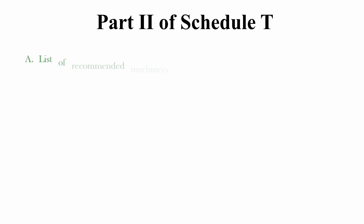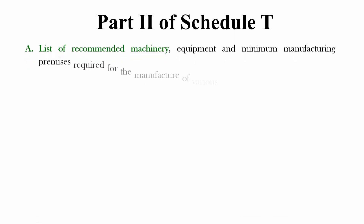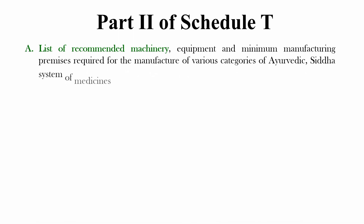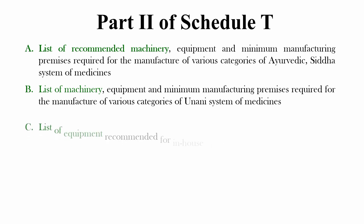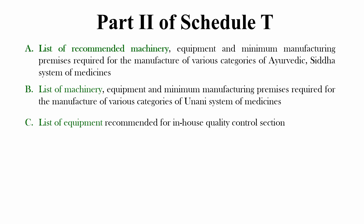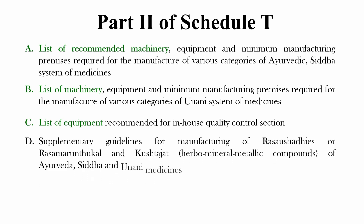Part 2 of Schedule T is the list of recommended machinery and minimum manufacturing area. Point A is the list of recommended equipment and minimum manufacturing premises required for the manufacture of various categories of Ayurvedic and Siddha system of medicine. Point C is the list recommended for the in-house quality control section, and Point D is the supplementary guideline for the manufacture of Rasa Aushadhi — that is, herbal mineral and metallic compounds of Ayurveda, Siddha and Yunani medicine.